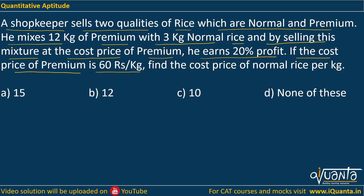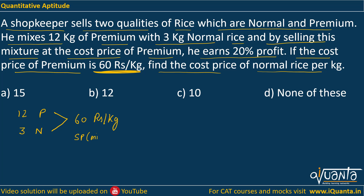We need to find the cost price of normal rice per kg. He has 12 kg of premium and 3 kg of normal rice. This mixture is sold at the cost price of premium, which is Rs 60 per kg. So Rs 60 per kg is the selling price (SP) of the mixture.